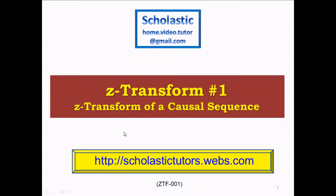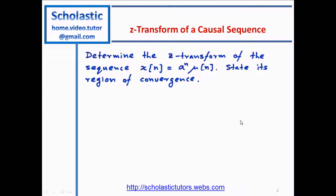Hi, welcome back. Today we look at the Z-transform of a causal sequence. We will determine the Z-transform of the sequence X[n] equal to A to the n times mu[n], where mu[n] is a unit step function and the square bracket means this is a discrete function. n is the index. We also need to state its region of convergence.